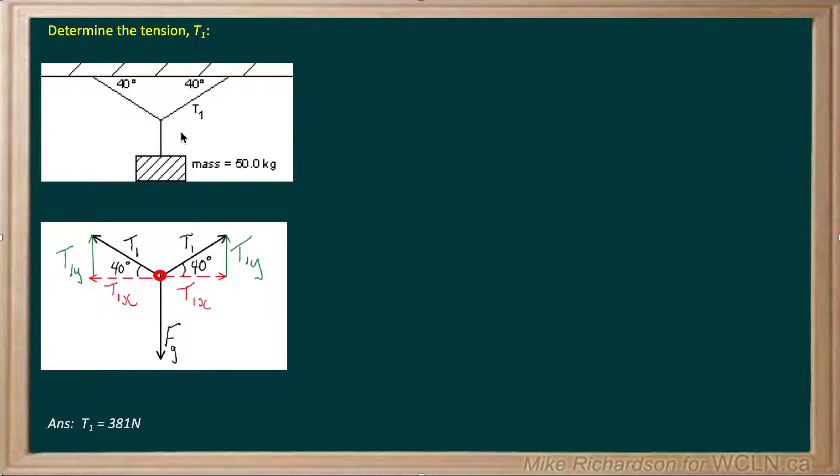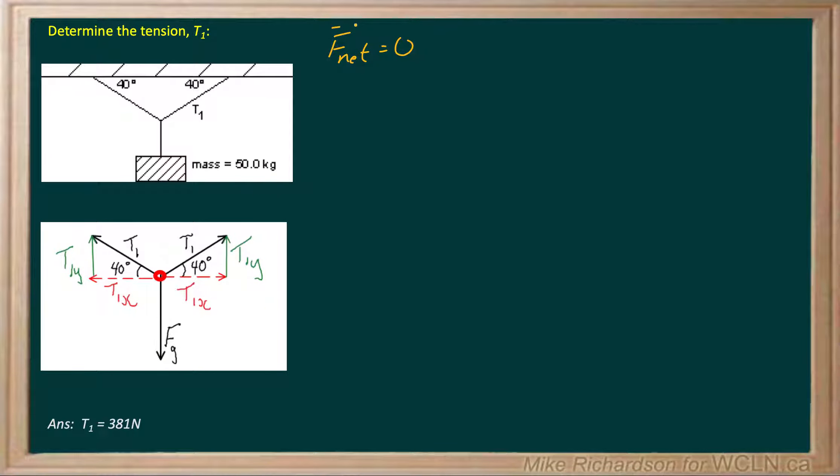Now this is a good example of a translational equilibrium question, where it's clearly not moving, so our net force must be equal to zero, which means the sum of all our forces has to add up to zero. We're going to look at that in both the x direction, the sum of all the forces in the x have to add to zero, and we're going to look at that in the y direction.